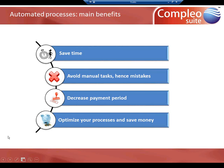The main benefits of automating document processes: you save time because everything is done automatically rather than interactively. It avoids manual tasks like sorting documents, saves money, and avoids mistakes. We had an example showing how linking invoices to the reminder letter decreases the payment period — also a matter of money. And as you optimize your processes, you save money in terms of human resource costs.